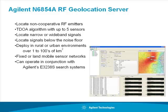The N6854A is designed to locate non-cooperative RF emitters using the TDOA algorithm with up to five sensors. We can locate narrow or wideband signals, and even signals below the noise floor. The algorithms are appropriate for a sensor network deployed in rural or high multipath urban environments over an area of a square kilometer to hundreds of square kilometers. They also support fixed or land mobile sensor networks, and can operate in conjunction with the Agilent E3238S search system.